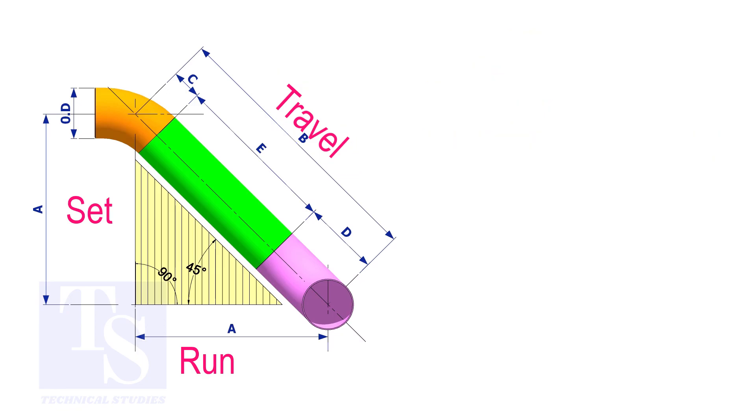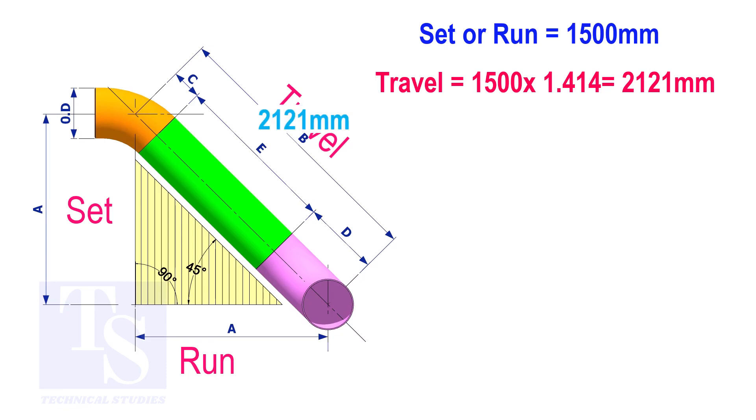Try another example. Suppose the value of the set or the run is 1500 millimeters. The value of the travel will be 1500 multiplied by 1.414 equals 2121 millimeters.